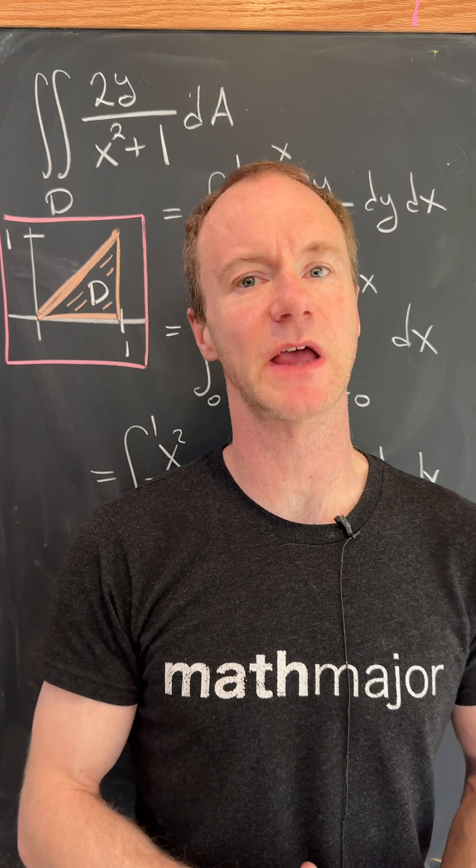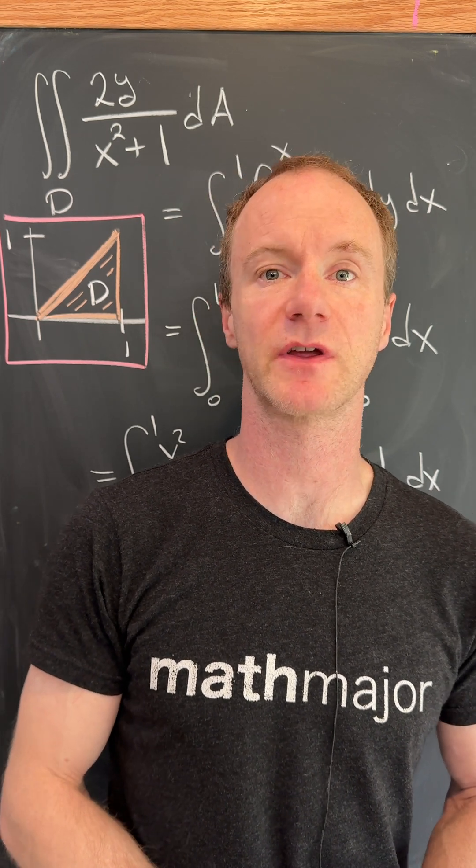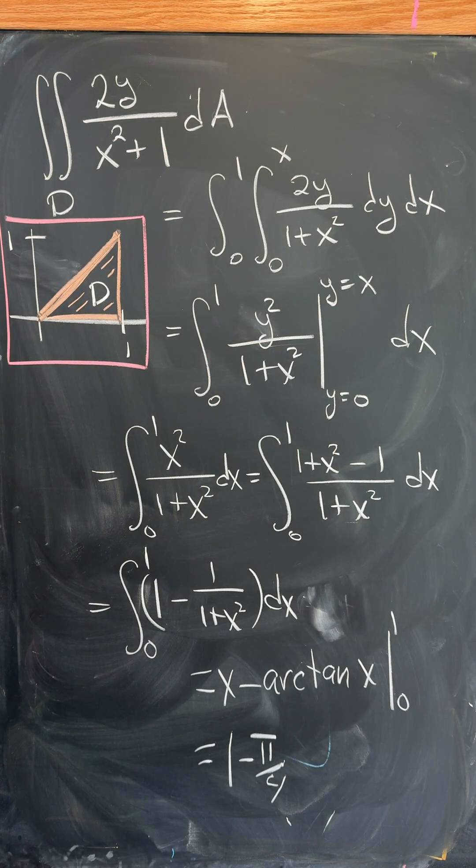Let's look at what would be a fairly typical calculus 3 or multivariable calculus double integral. So it's the double integral over a region D of 2y over x squared plus 1 dA,